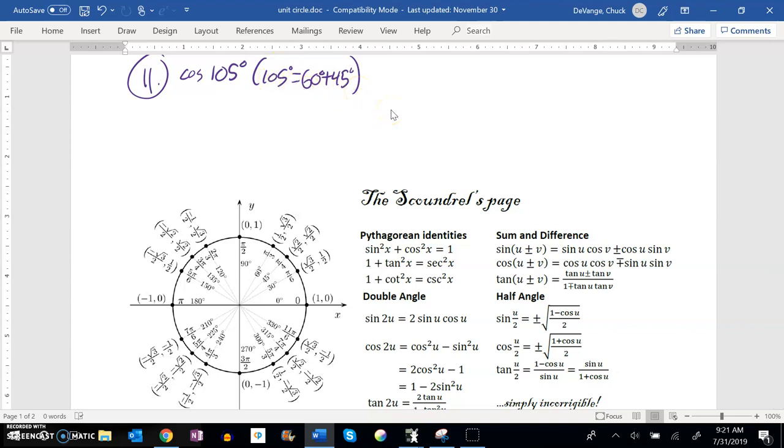So this cosine of 105 degrees, we'll think of it as cosine of 60 degrees plus 45 degrees. So that's a sum relationship. That's going to be this one right here.